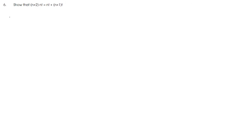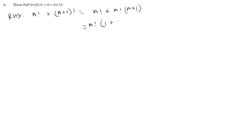Next question: show that (n + 2) × n! = n! + (n + 1)!. Taking the right hand side: n! + (n + 1)! = n! + n! × (n + 1). Taking n! as common: n!(1 + n + 1) = n!(n + 2). This equals the left hand side. Hence proved.